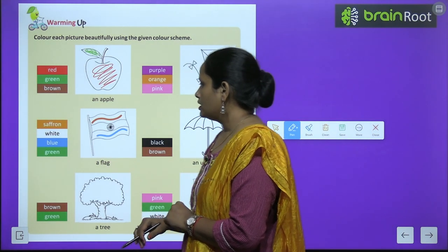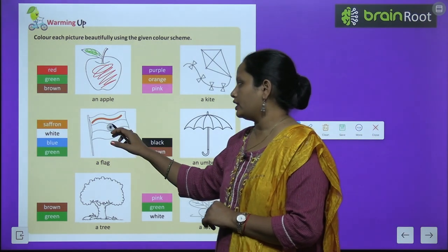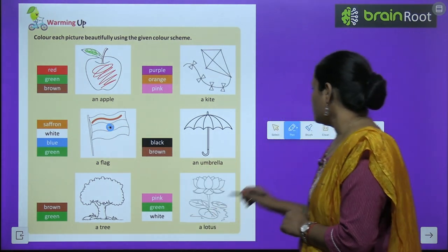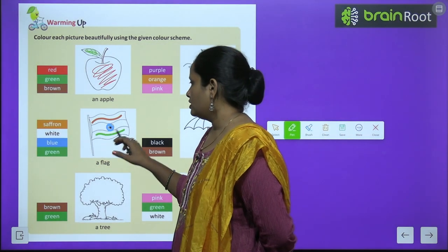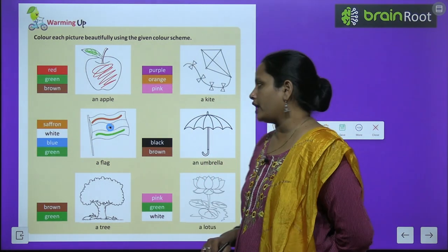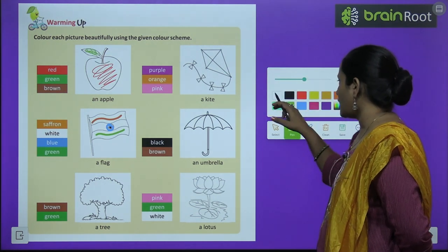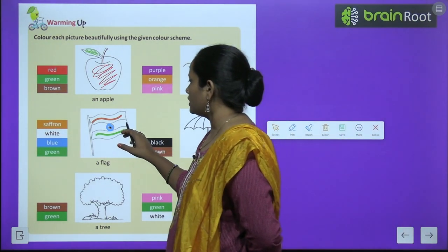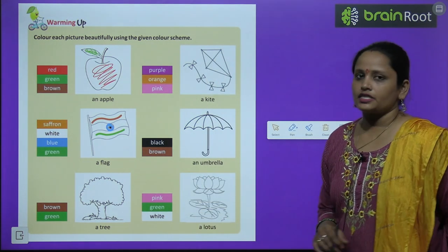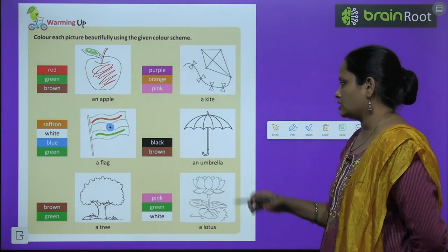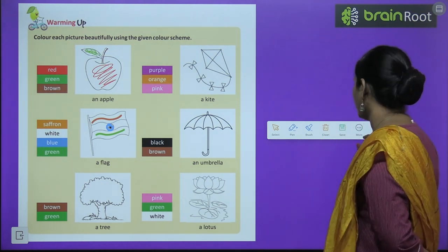Then white, and then blue colour. Children, you have to fill blue colour in the Ashok Chakra, and green colour here. So it is saffron, white, and green. This part you have to fill white colour. This is our national flag. Similarly, colour the rest of the pictures given here.